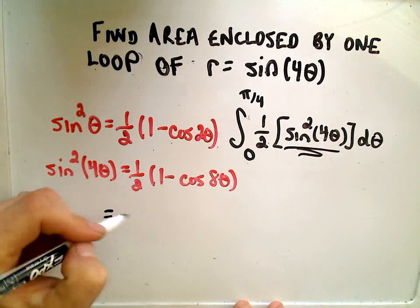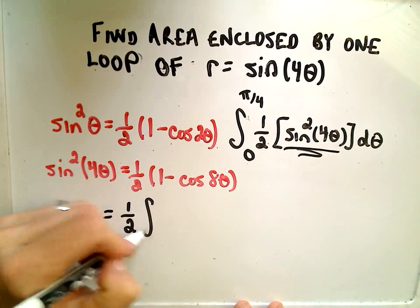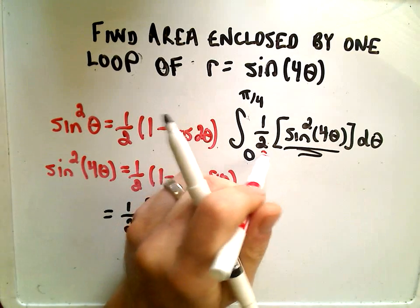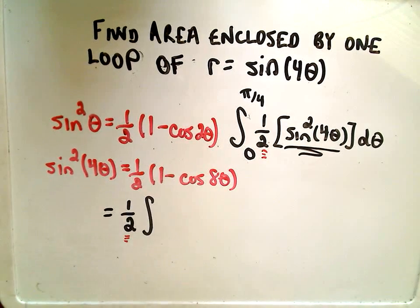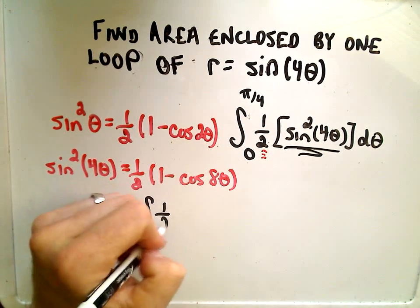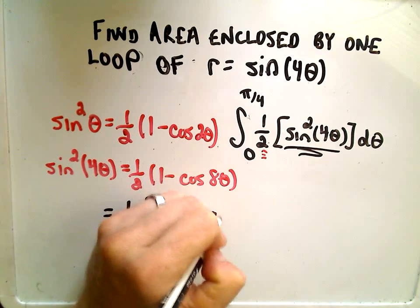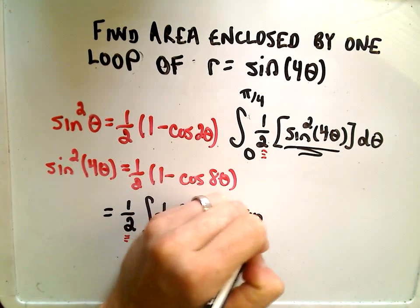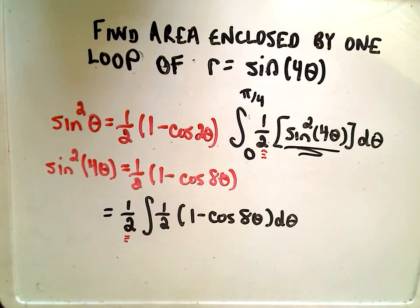When I integrate, I'm going to pull my original one-half out front. So there's the one-half that just comes from the formula. And now, when I use my trig identity on the sine squared four theta, I'm going to get one-half, one minus cosine of eight theta, d theta. And we have to integrate this from zero to the value pi over four.